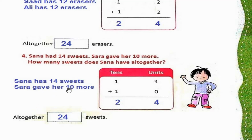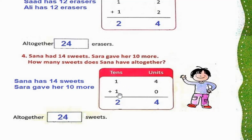So hum 14 ko 10 se add karenge. 14 plus 10: pehle unit place ke digits add karen — 4 plus 0 is 4. Phir tens place ke digits add karen — 1 plus 1 is 2. So total kya hai? 24. Altogether 24 sweets.